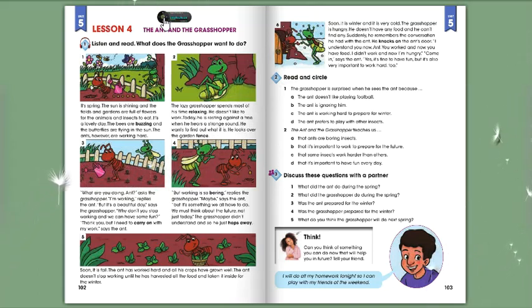What are you doing, ant? asks the grasshopper. I'm working, replies the ant. But it's a beautiful day, says the grasshopper. Why don't you stop working and we can have some fun? Thank you, but I need to carry on with my work, says the ant. But working is so boring, replies the grasshopper. Maybe, says the ant, but it's something we all have to do. We must think about the future, not just today.